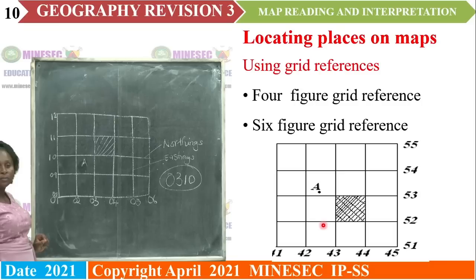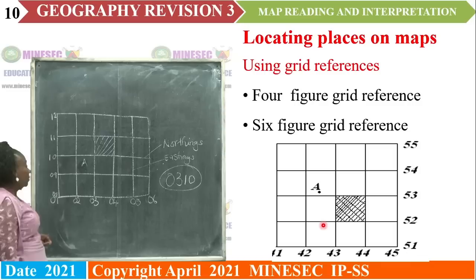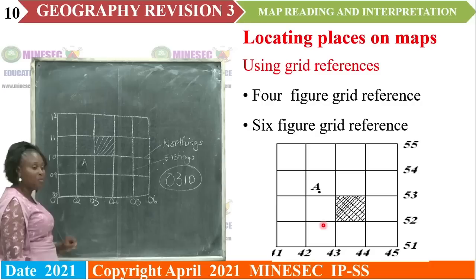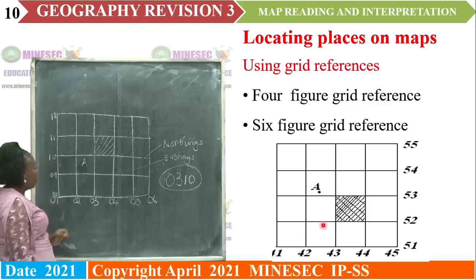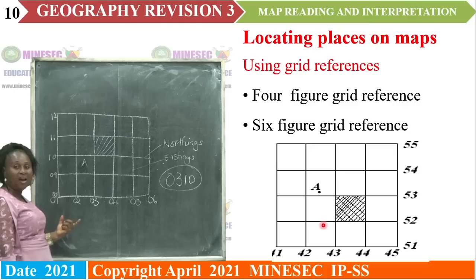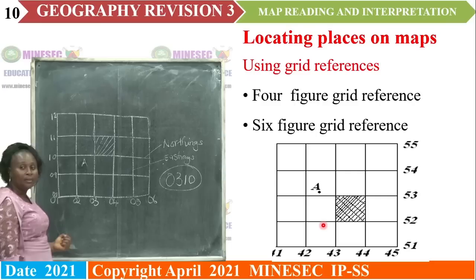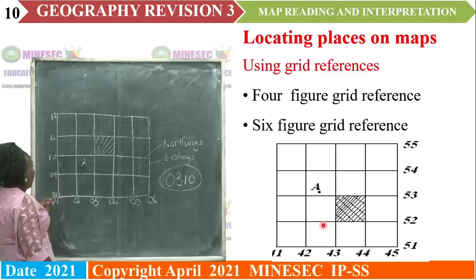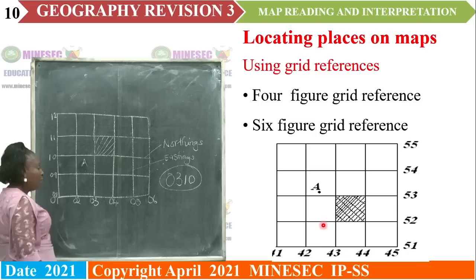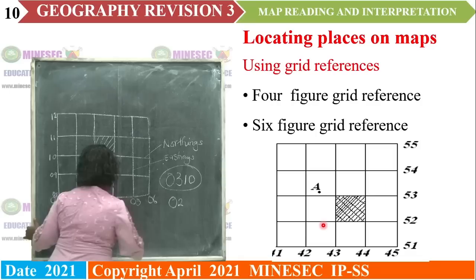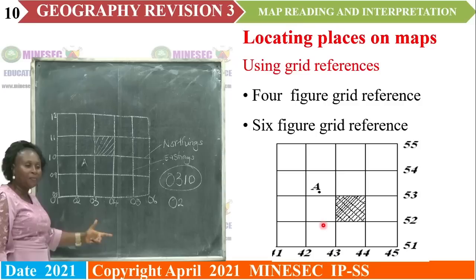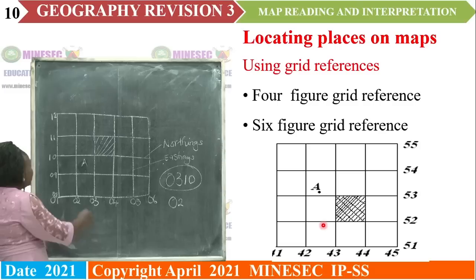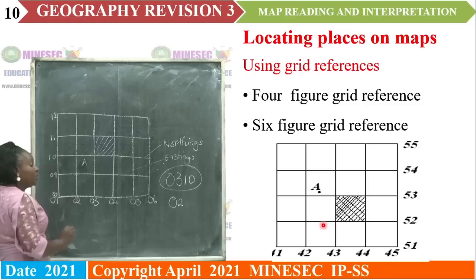In locating specific features, we use the six-figure grid reference. Remember, we start reading from the easting before we move to the northings. We have letter A between the grid square 02 and 03. We take the smaller value, 02. To get the third figure of the easting, we come to the square where the feature is found and divide the square into 10 units. Count with me: 1, 2, 3, 4, 5, 6, 7, 8, 9, 10.